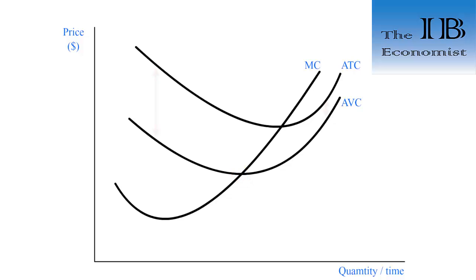Notice that the spread between the average total cost and the average variable cost is larger at low levels of output and gets progressively smaller at high levels of output. As output increases the average total cost and the average variable cost are going to converge. The two of them would never intersect, but the AVC will get very close to the ATC, and the explanation for that lies within the average fixed cost.